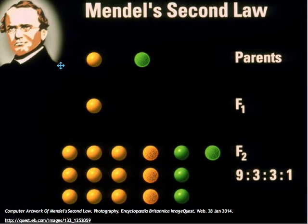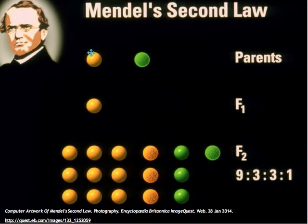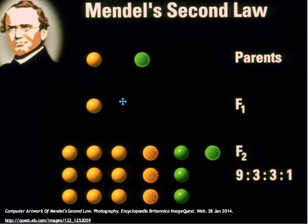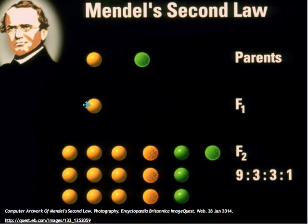Mendel's second law, the law of independent assortment. Its formulation came from his famous cross between pure-breeding round yellow peas and pure-breeding green wrinkled peas. The first filial generation, or F1, from this cross produced only round and yellow peas. But Mendel had the foresight to self the F1, crossing them with themselves and with others of the same generation. This gave rise to what he termed the F2 generation.